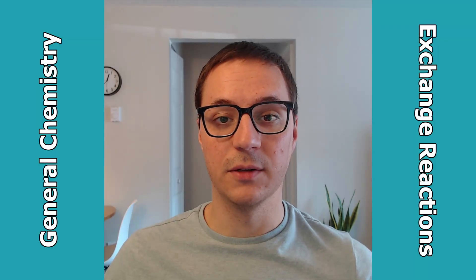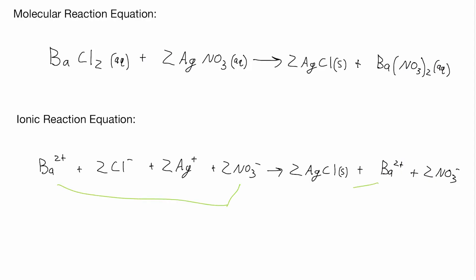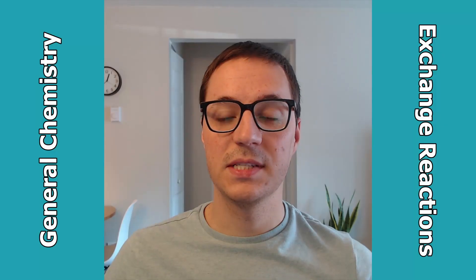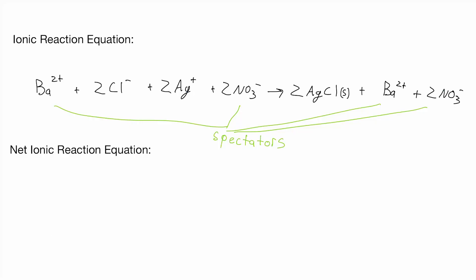In the ionic reaction equation I can see that some ions show up on both sides of the equation. These are spectator ions, which means they don't participate in the reaction. To write a simplified version of this reaction, I can simply exclude the spectator ions to obtain the net ionic reaction equation.